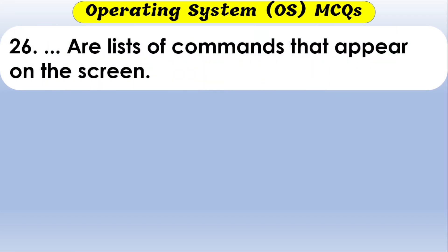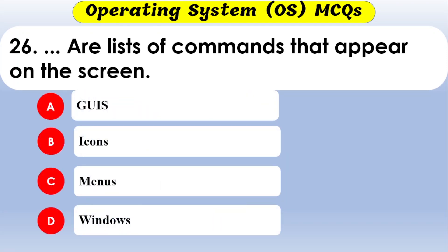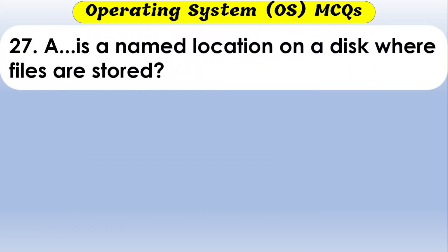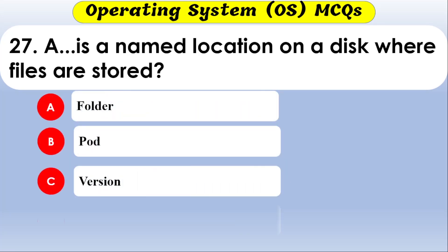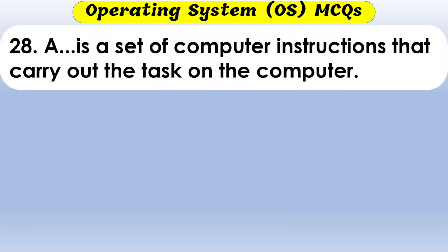A list of commands that appear on the screen — the options are GUI, icons, menus, and none of the above. The correct option is menus. A named location on disk where files are stored — the options are folder, path, version, and none of the above. The correct option is folder.